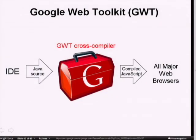So Google Web Toolkit, the last chapter in tonight's end-to-end Java story, addresses precisely this. For those of you who are not familiar with Google Web Toolkit, the premise is simple: it allows you to write your application in Java — both the client and server — and then it compiles that Java code down to JavaScript. When you do this, you gain a number of benefits.